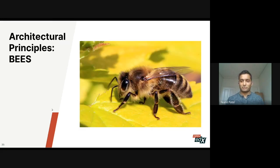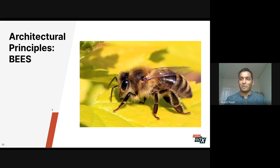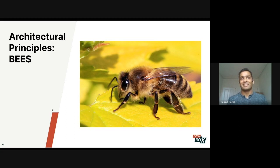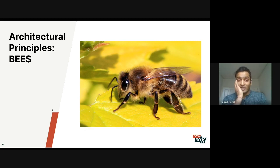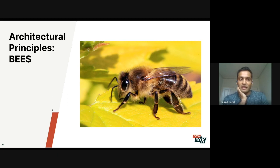Those are the physical parts of the platform. Now, more theoretically: the architectural principles we're following. These are things we've learned over time that help us think about the platform more holistically and answer higher-level questions. We've been moving towards a concept we're calling BEES, which stands for Boundaries, Extensions, Events, and Standards. We'll talk in a bit more detail about what all of those mean.